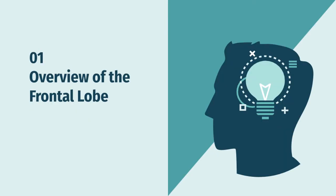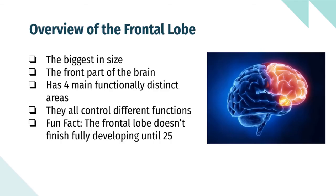First, I'm going to cover the overview of the frontal lobe. The frontal lobe is the biggest lobe in the brain. Due to its large size, it has many different functions. As conveyed by its name, the frontal lobe is at the utmost front of the brain. The brain has four main functionally distinct areas: the primary motor cortex, the medial areas, the orbital areas, and the lateral areas. They all control different functions in the frontal lobe.